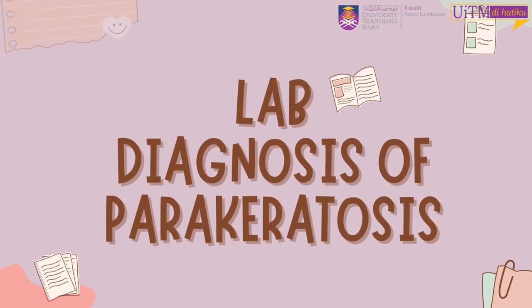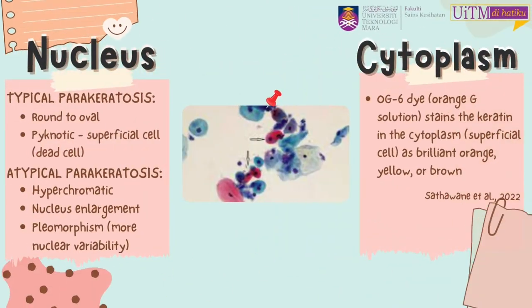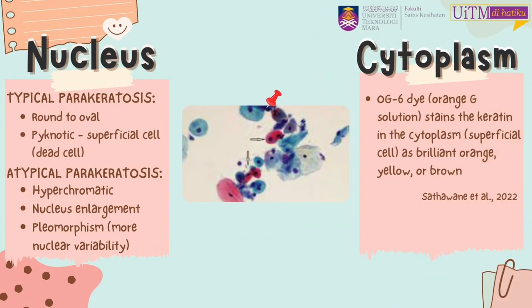For lab diagnosis of parakeratosis, first observe the nuclear characteristics. For typical parakeratosis, the nucleus is round to oval and pyknotic. For atypical parakeratosis, the nucleus is hyperchromatic with nuclear arrangement and pleomorphism. The cytoplasm of the cell will appear bright orange, yellow, or brown due to the presence of keratin.